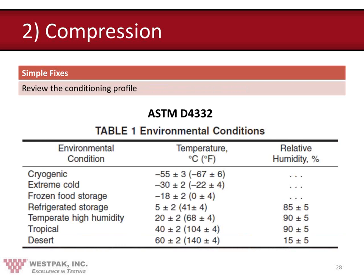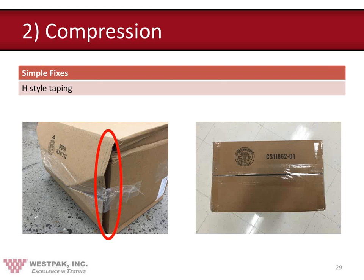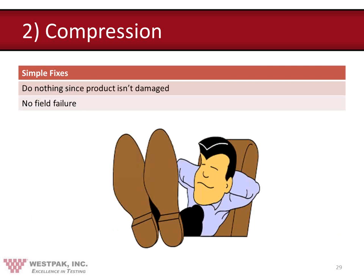Another simple fix is to reorder the conditioning profile, as mentioned for drop testing. Additionally, consider tape style — if there's only one beam of tape on the box, the flaps can buckle outward during compression. Applying tape in an H-pattern — one middle beam plus left and right edge beams — will reinforce the box and minimize buckling during compression. And again, if the product is not damaged when arriving to the end user and there are no field failures, then do nothing.